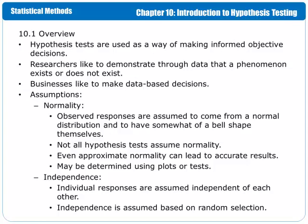Normality may be determined by looking at plots like a histogram or by conducting normality tests. The assumption of independence implies that individual responses will be independent of each other. What that means is that the individuals in the study are not somehow connected in such a way that they will bias the results.